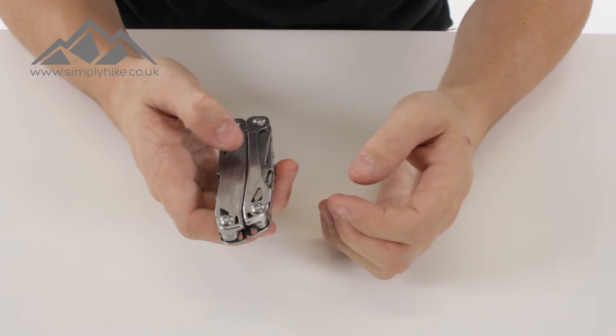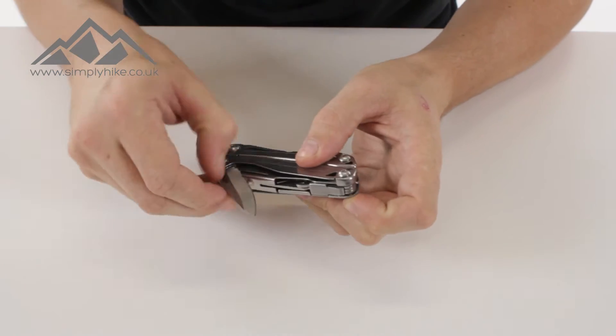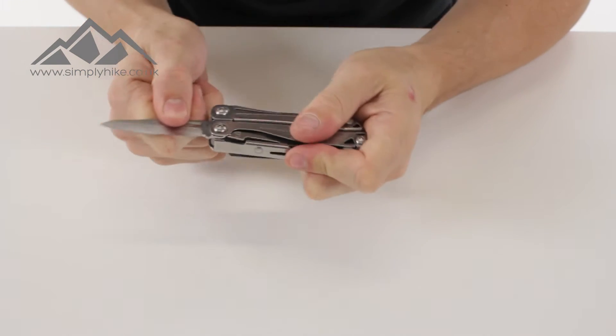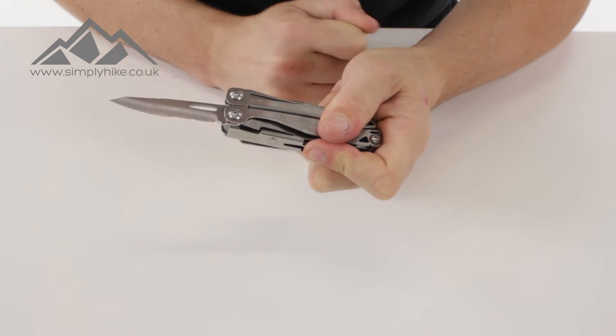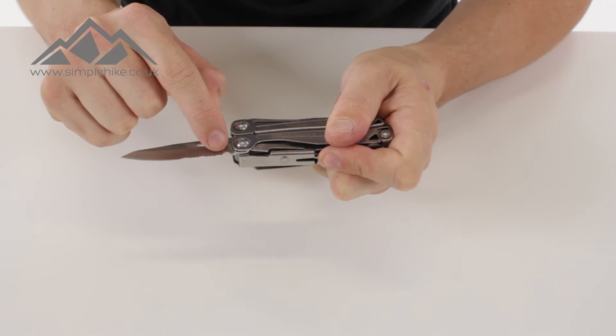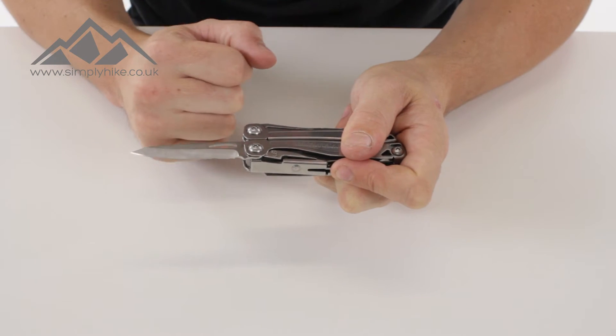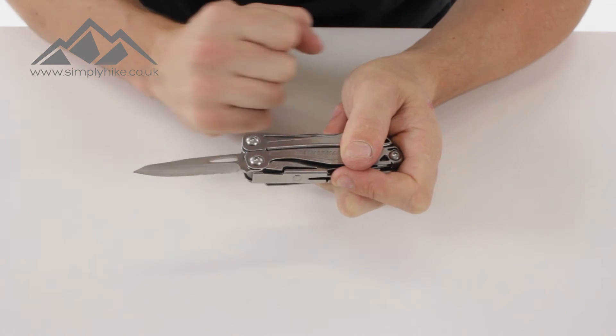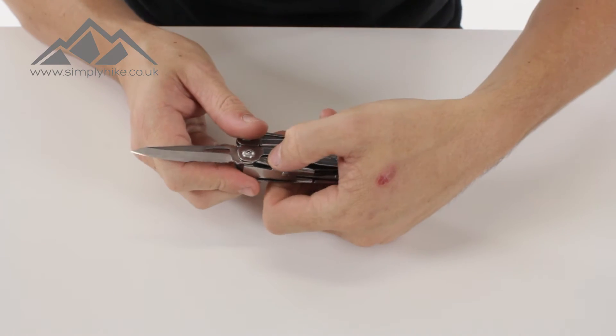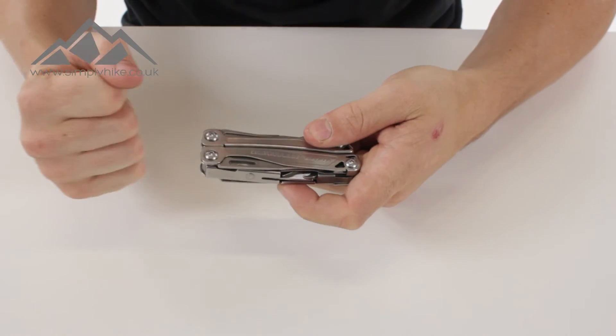Now before I open up the multi-tool I'm going to talk to you about the two features that you have on here first. Firstly, you have the knife. Now, that locks into place so that knife, now it's in its place, it's not going anywhere. It's a really nice sharp edge knife and you do have kind of bite marks in there as well so you can use that to cut additional items. It's all nice and locked in place. Blade length itself is 2.6 inches and in order to put it away you just push down on this plate here and that slides in nicely.